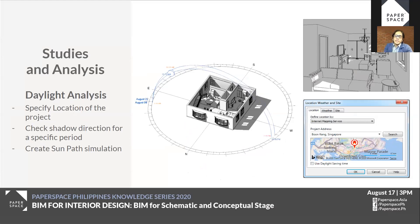Daylight is very essential in planning. It can accentuate areas, give better visuals, and provide a warm ambiance for spaces. In order to have a good daylight study, you need to specify the correct project location, because in reality daylight varies based on the specified location. You also need to visualize shadows from different periods. With BIM applications like Revit, features like Solar Study will enable you to do this. You can even do simulations for a specific date or time you want to project. In my next presentation, I'll show you a short video clip on how to create your own Solar Study using Revit.